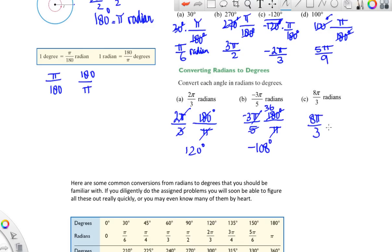And then finally, 8π over 3. 8π over 3 is more than 2π, right? 8π over 3 is 2 and 2 thirds. And we know that 2π was 360 degrees, so I should get something bigger than 360, right? So π over here, 180 over there. π cancels. 180 divided by 3 is 60. 8 times 60 is 480. With another 0. So 480 degrees.